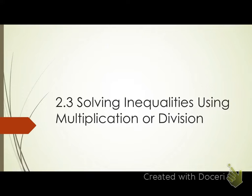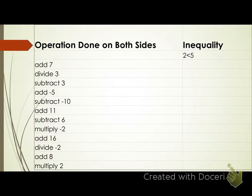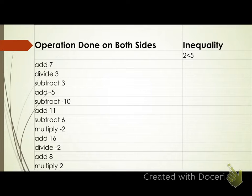There is one small difference when we're multiplying or dividing our inequalities, so let's talk about that. I've given you an inequality: two is less than five. Does everyone agree that's a true inequality? We're going to do these operations on both sides and see what happens.